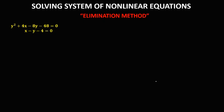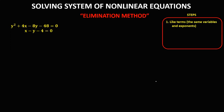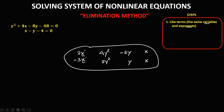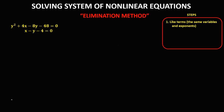Take note that we can only use the elimination method if there are like terms in the system. Like terms are terms with the same variables and the same exponents. Examples of like terms: 2x and negative 3x, 4y squared and 2y squared, negative 5y and y, or x and x.